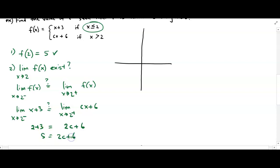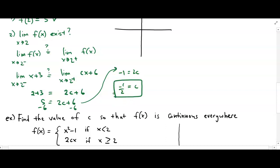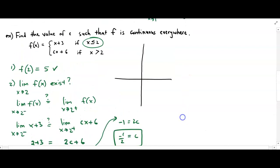Now we're solving for c. Subtract 6 on both sides and you get negative 1 equals 2c. Divide by 2 and you get c equals negative one half. Going back to the question — find the value of c so that the function is continuous everywhere. We were using our conditions to check for continuity, and in that process we determined c equals negative one half.